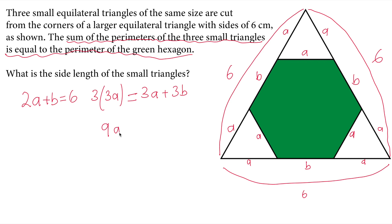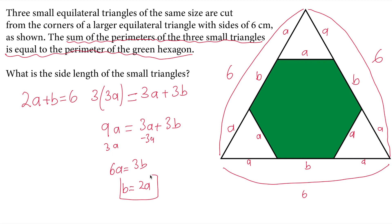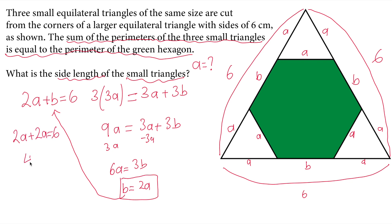So I have 9A equals 3A plus 3B. If I subtract 3A from both sides, I get 6A equals 3B. Dividing each side by 3 gives B equals 2A. Now I need to find A, since the question asks for the side length of the small triangles. I will substitute B equals 2A into the first equation: 2A plus 2A equals 6, so 4A equals 6. Dividing each side by 4 gives A equals 1.5 cm.